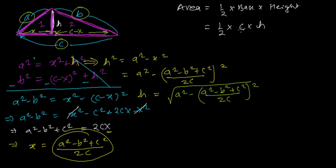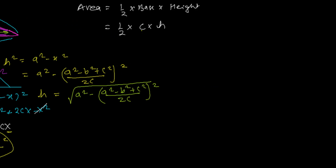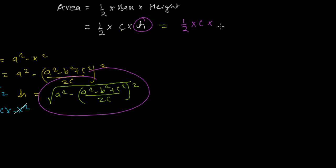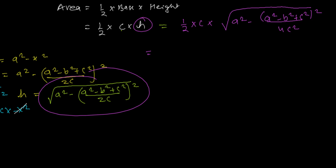We know c and now we know h. Plugging into the area formula: Area = (1/2) × c × h = (1/2) × c × √[a² − ((a² − b² + c²) / 2c)²]. Squaring the bracketed term places it over 4c². The calculation is complex, so I'll bring everything inside the square root.